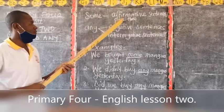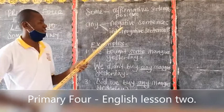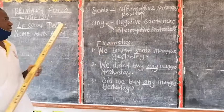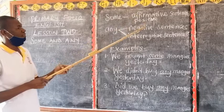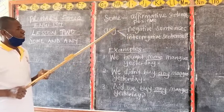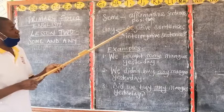Then, any is used for two forms of sentences — that can be negative and interrogative. Remember, when we were looking at the use of many and much, I talked about negative and interrogative sentences. Negative is when the sentence contains the word not. Interrogative is when it is in question form. So when it is negative, we use any. Also, interrogative, we use any.